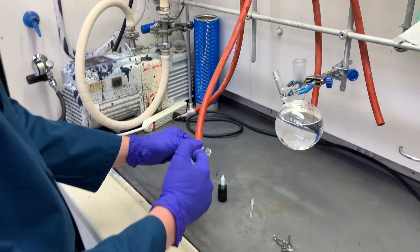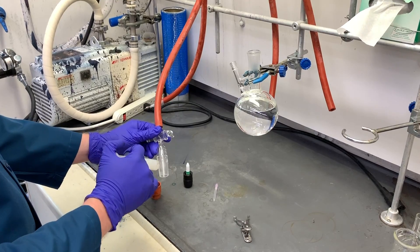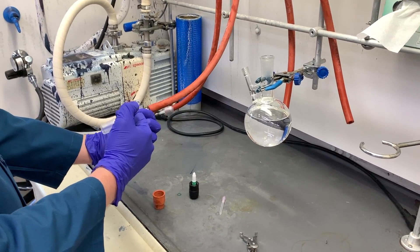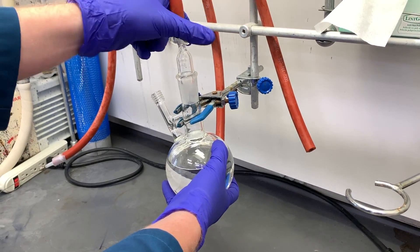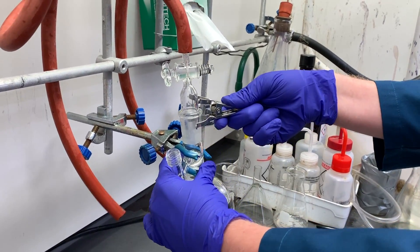Then connect one tap of the Schlenk manifold to your flask using a 24/40 hose barb adapter. Don't forget the grease and a clamp or rubber band to keep it firmly in place. We will be operating at higher than atmospheric pressure.